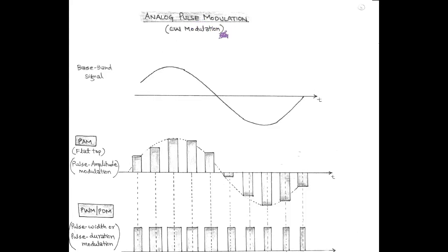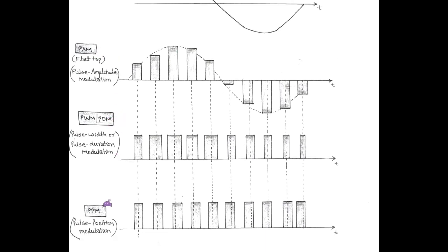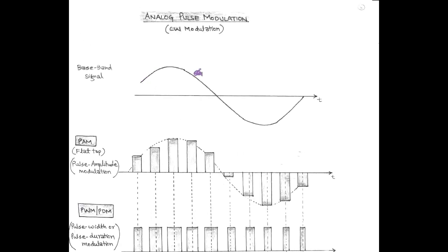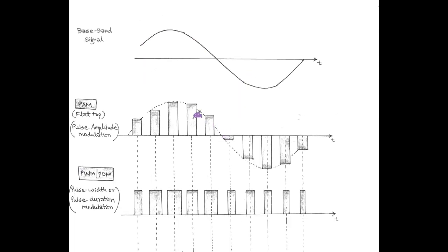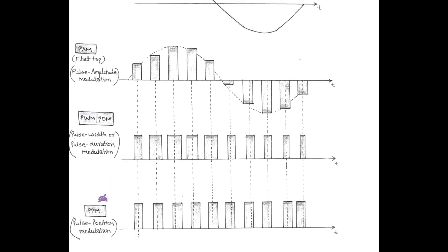Welcome friends. Our next topic is analog pulse modulation. Analog pulse modulation is a type of continuous wave modulation. In this, parameters such as amplitude, duration, or position of a pulse train are varied in accordance with the message signal. Accordingly, in analog pulse modulation we have pulse amplitude modulation, pulse width modulation, and pulse position modulation.